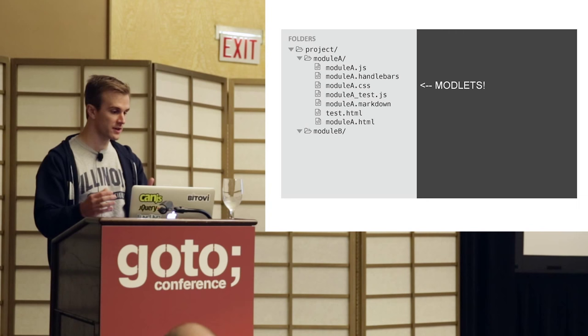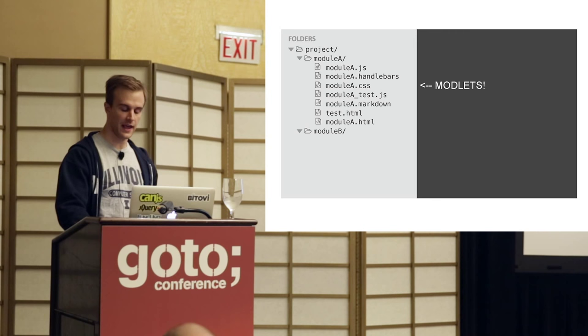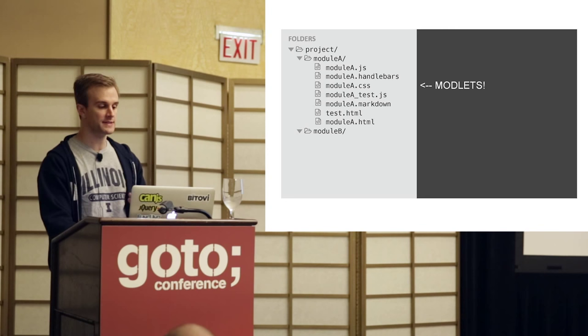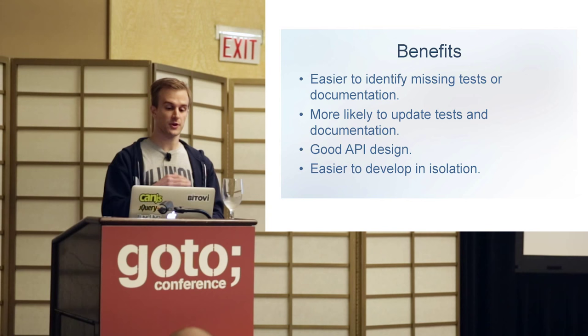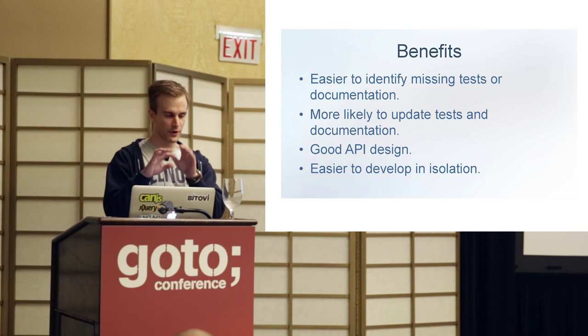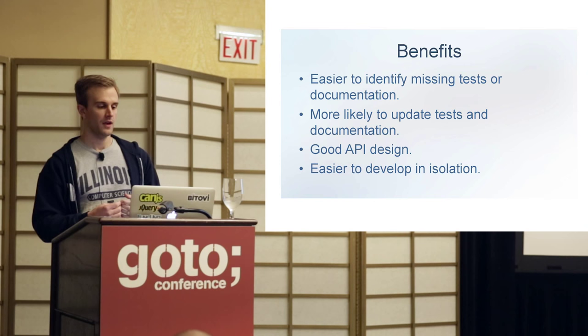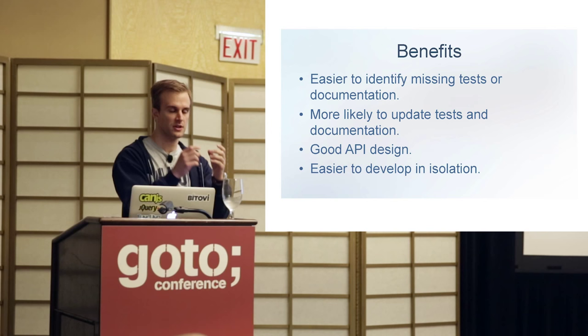We always include a test page that runs just that module's tests. And for visual widgets — visual modules — we include a demo page that shows off just that module's functionality. The benefits: it's easier to identify when someone's missing tests, because you can look in the folder and say there's no test file. Developers are much more likely to update a test when they're working in a module and the test is staring them in the face. Making tests and a demo page leads to good API design. And the biggest benefit is that you can develop in isolation, completely ignoring the rest of the application.